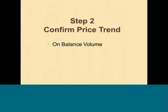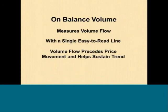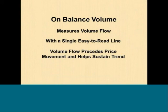Step two of our three-step technical process: we want to confirm the price trend. On any given day, you could have hundreds of stocks on a buy signal with the 50-day EMA above the 100-day EMA. What we want to do is narrow that list down to the best profit opportunity. One of the trend confirmation indicators I like to use is on-balance volume. The on-balance volume indicator measures volume flow with a simple, easy-to-read line.